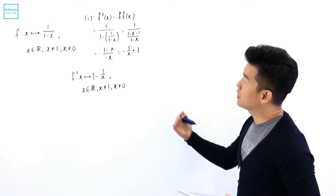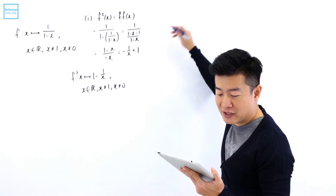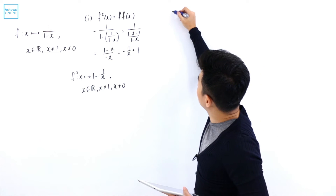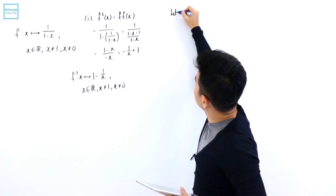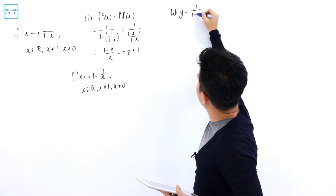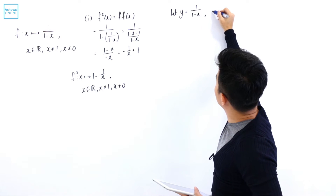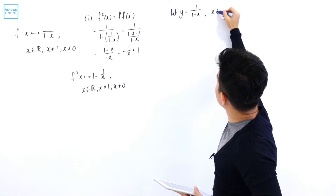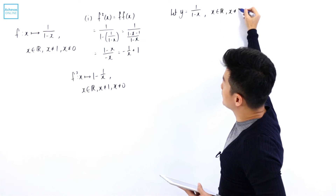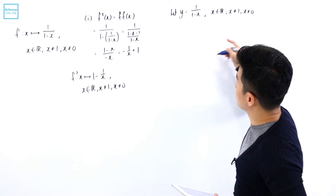Next, we want to look at the right-hand side, which is f⁻¹(x). Let's first find the expression for f⁻¹(x). To do that, I'm going to let y be equal to 1 over (1 minus x). For this to be true, x must be all real numbers, and x cannot be equal to 1 and x cannot be equal to 0.